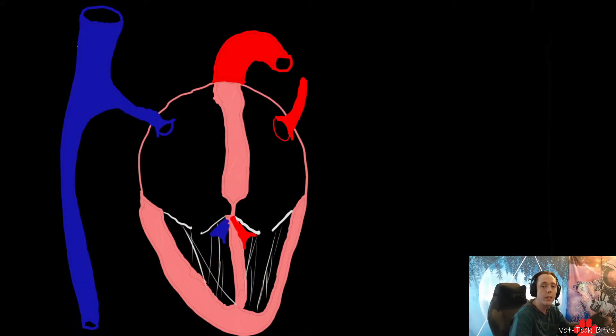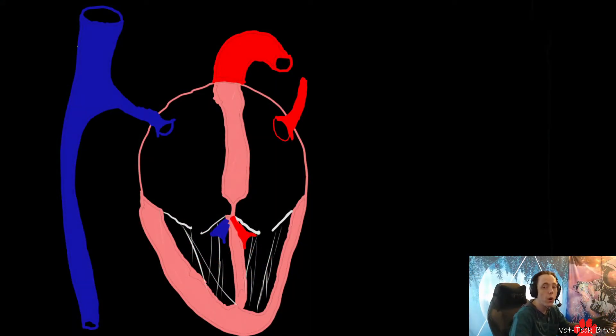I want to start off with the normal anatomy and blood flow through the heart so that way we can get the basics down first. We know that blood flows to the heart from the cranial and caudal vena cava, this big vein right here that goes from the rest of your body back to the heart. It goes right in here into our right atrium. This is where blood flow comes from the rest of the body, and then it goes through our tricuspid valve here and down into our right ventricle.